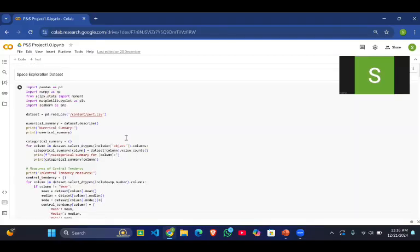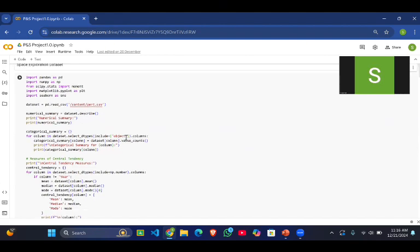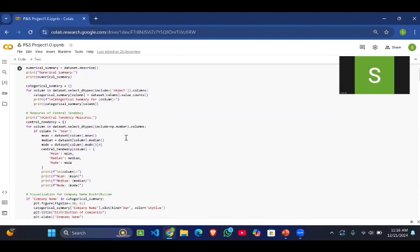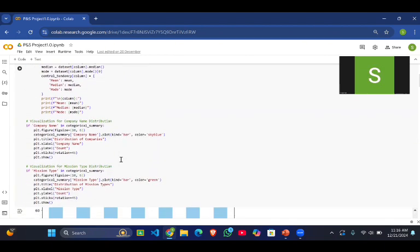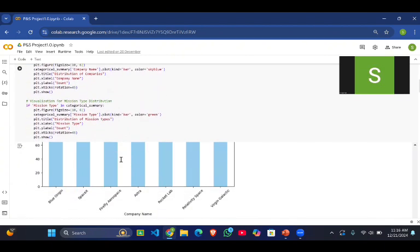First of all, we loaded our CSV file and we applied the measures of central tendency on numerical columns and visualized them through bar charts and histograms.